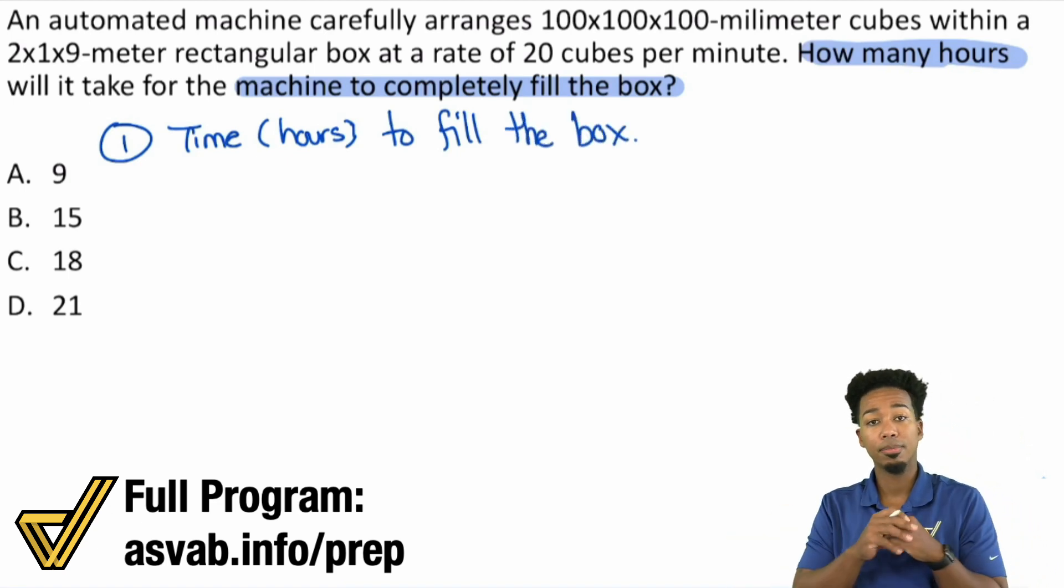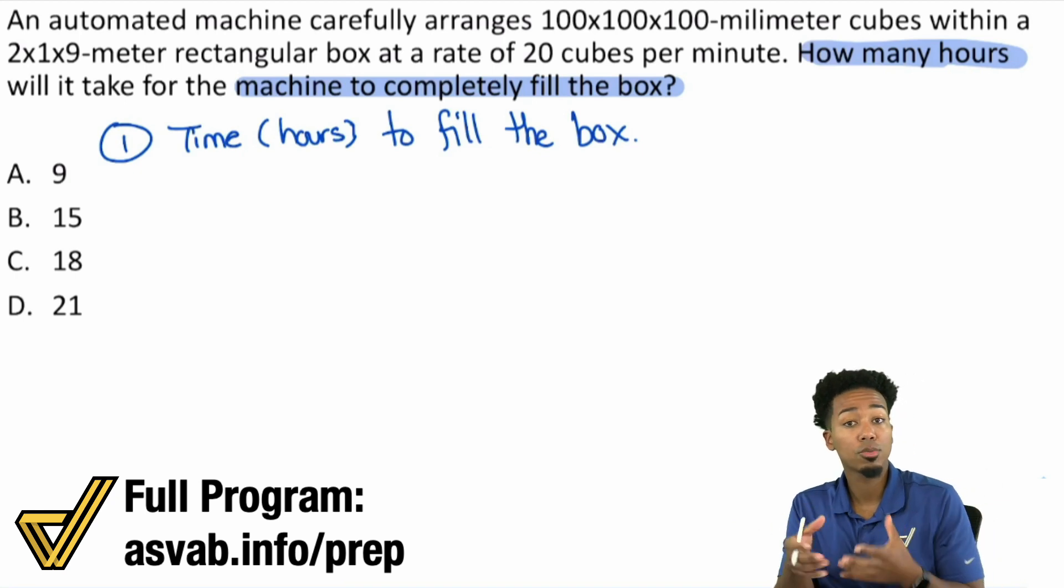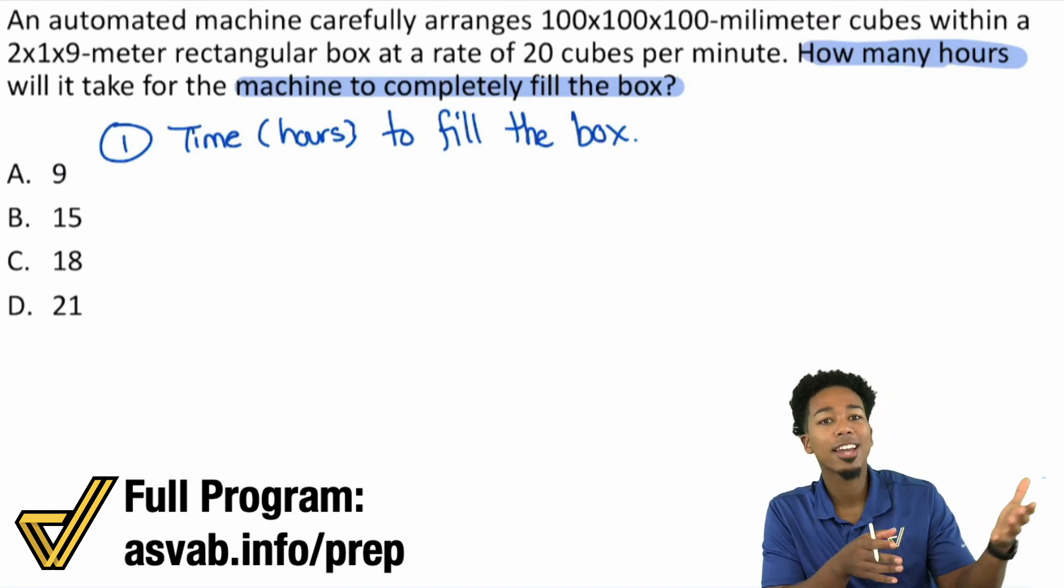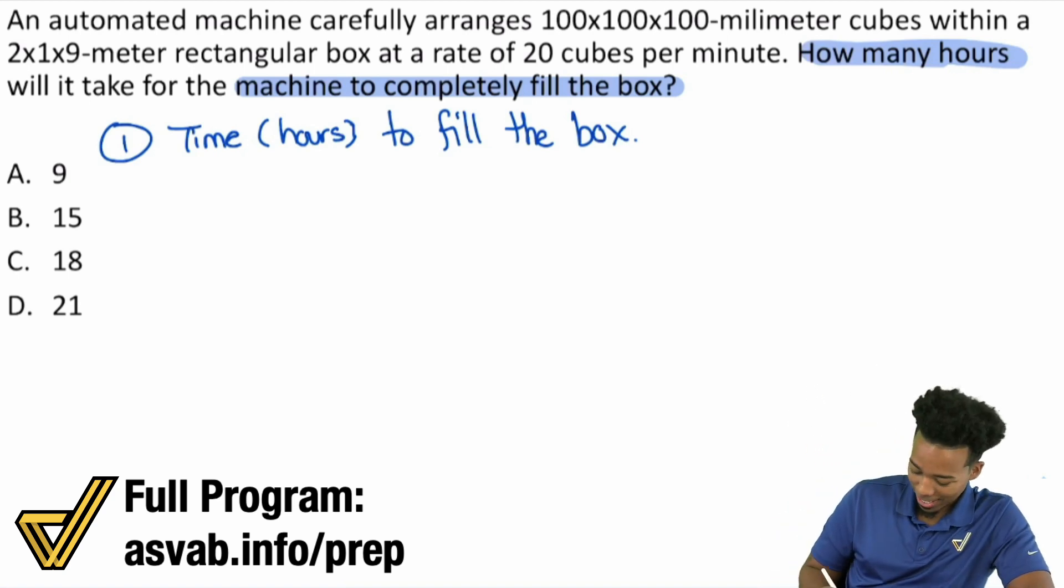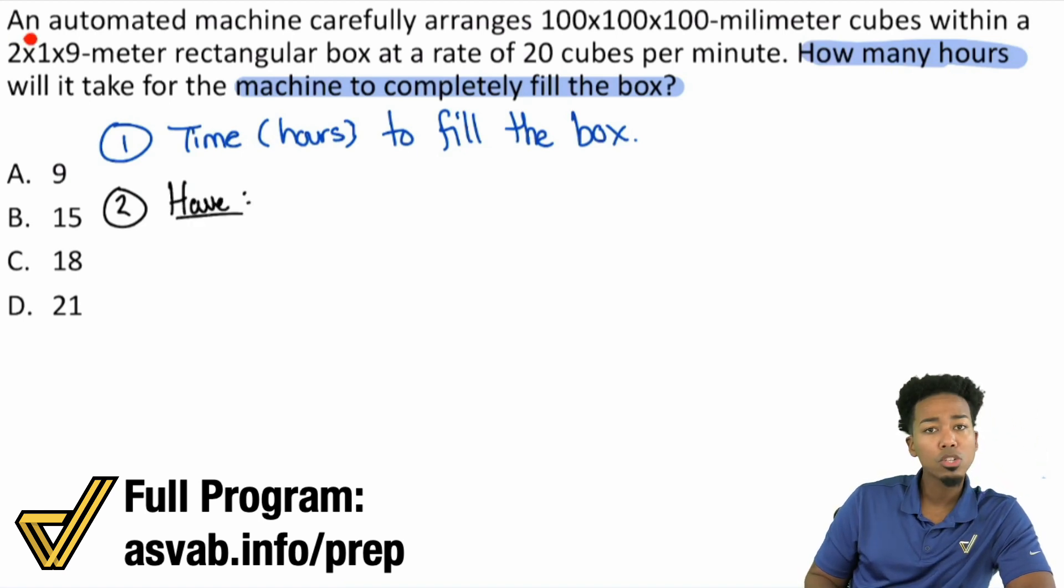Now, let's take a moment and go through the problem itself and understand the details. Number two, what do we have? An automated machine carefully arranges 100x100x100 millimeter cubes within a 2x1x9 meter rectangular box at a rate of 20 cubes per minute. How many hours will it take for the machine to completely fill the box?